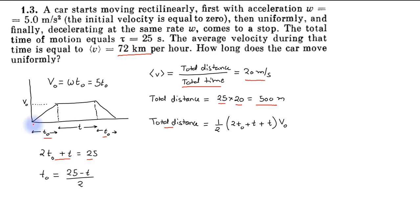This side will be equal to t₀ plus t plus t₀, which is this much time, multiplied by v₀, where v₀ is the peak velocity given by 5t₀. We also know the value of t₀ is equal to (25 minus t) divided by 2.